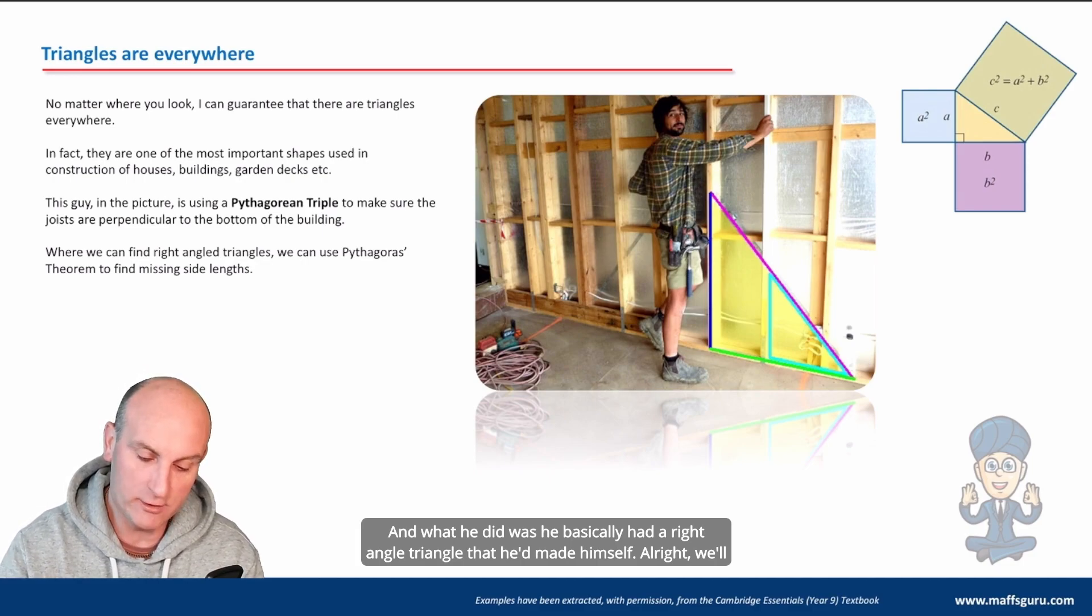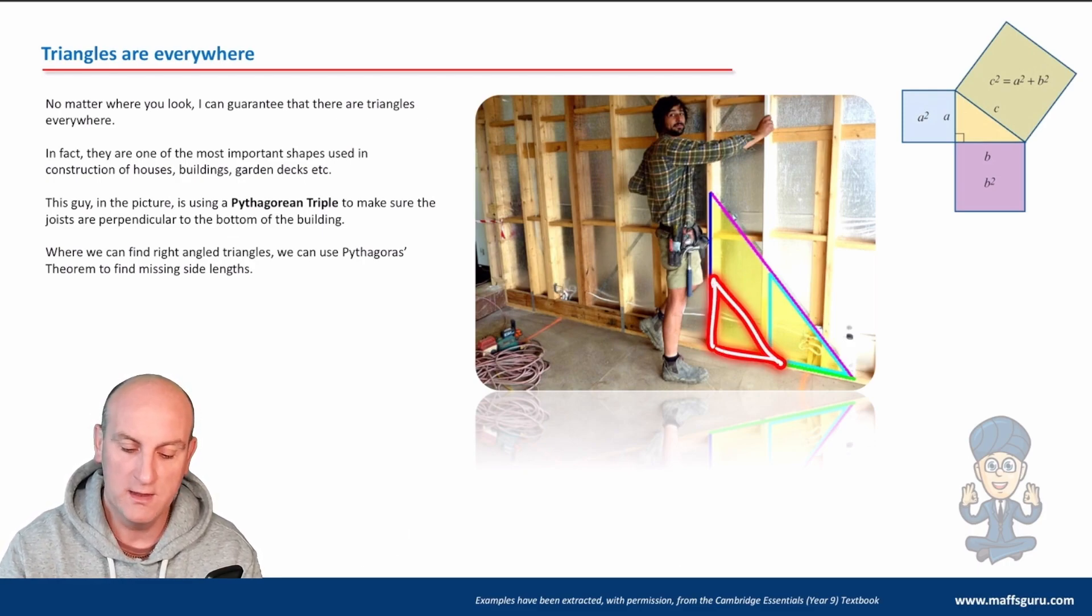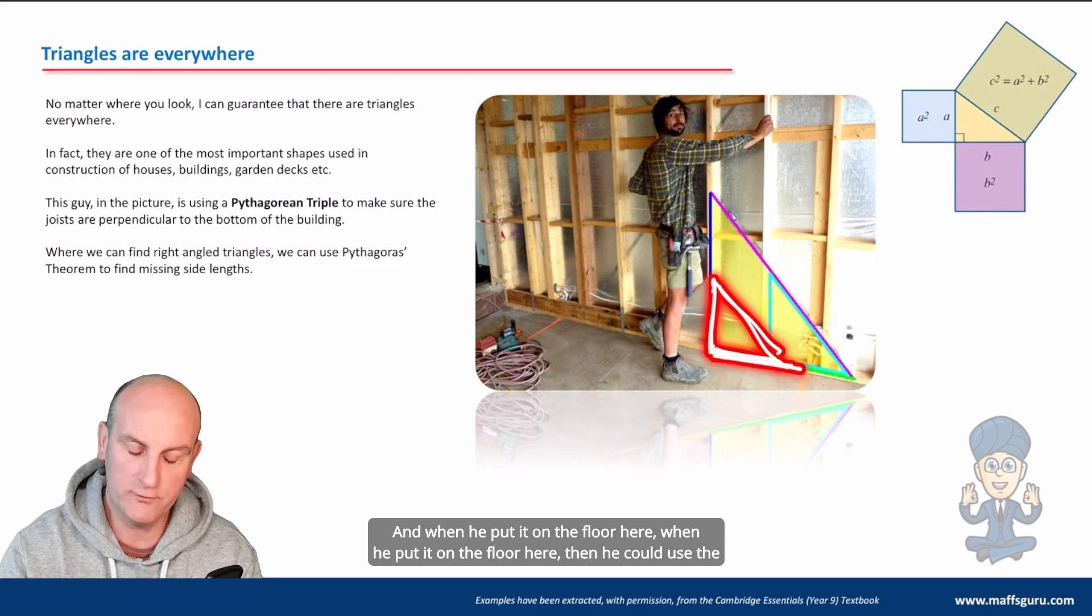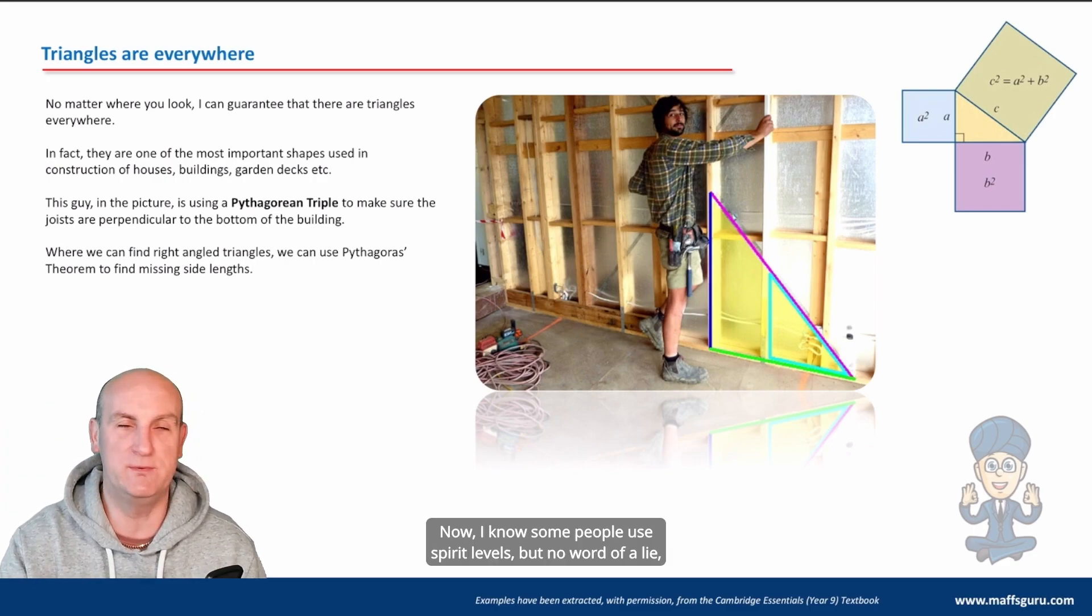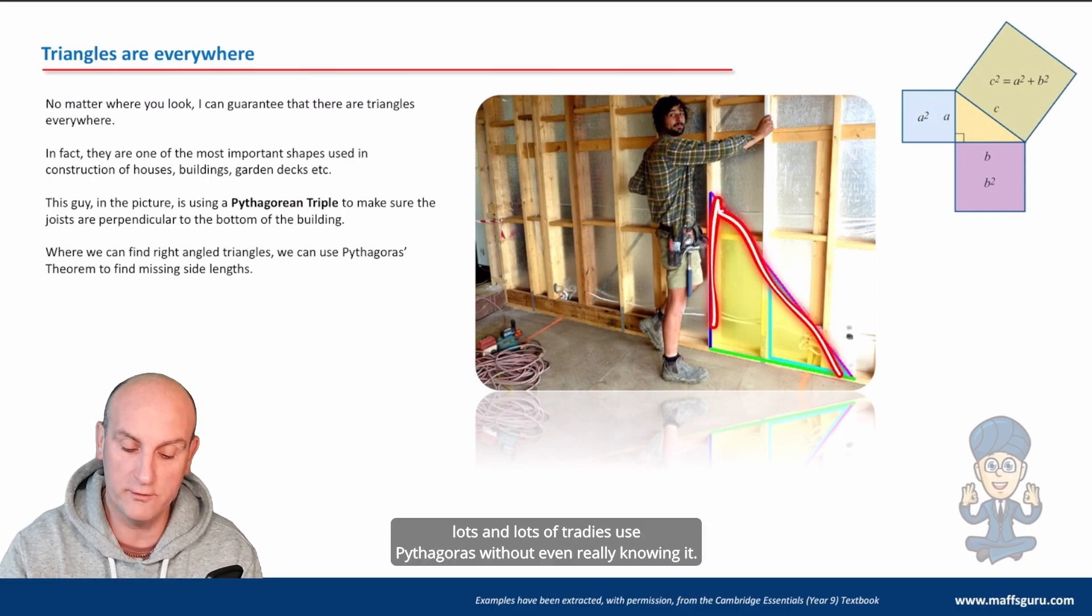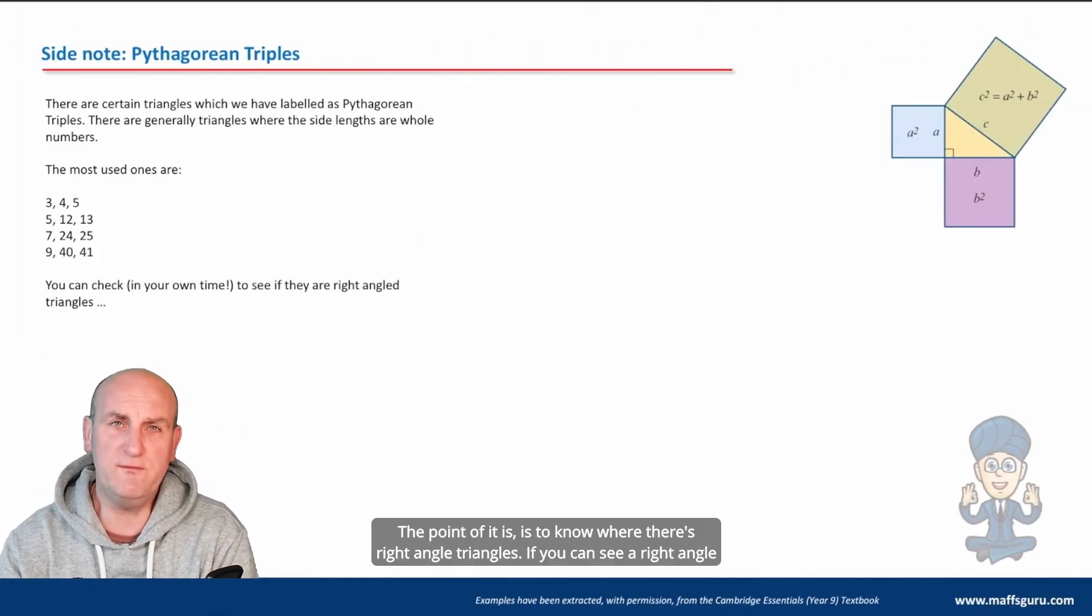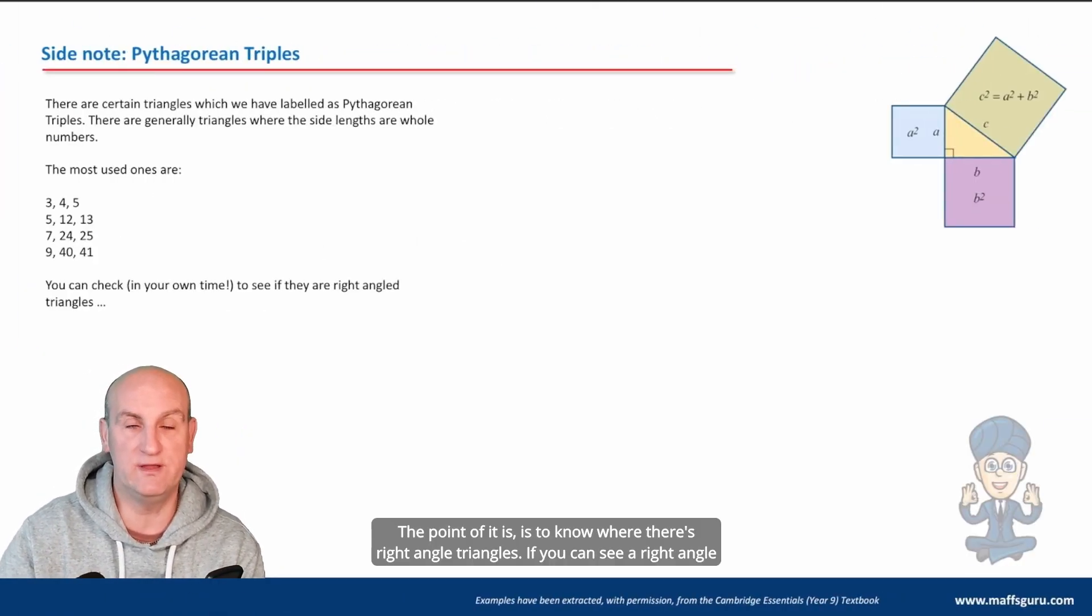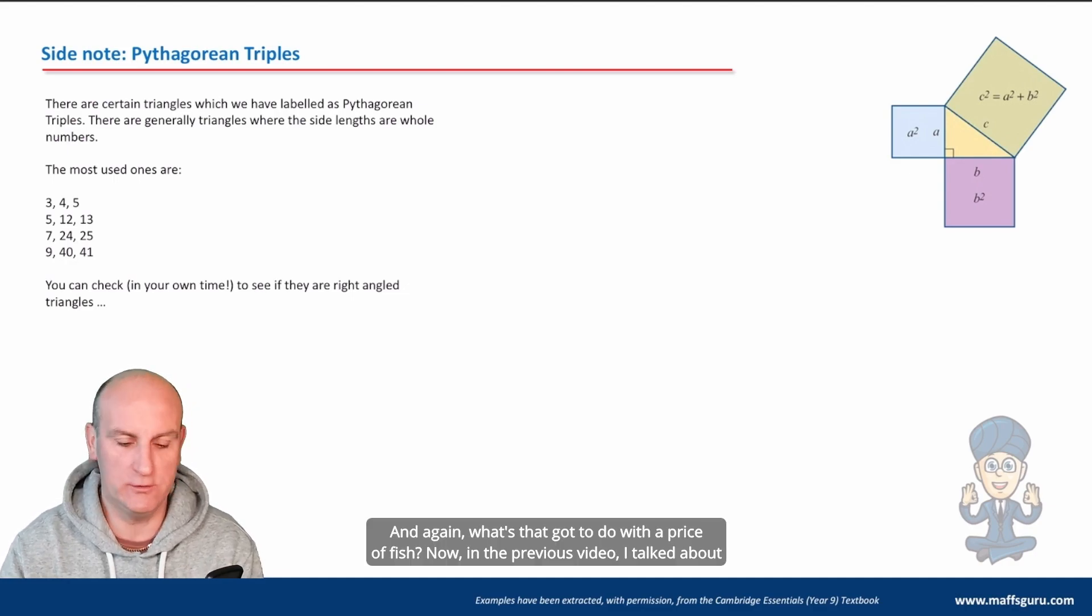What he did was he basically had a right angle triangle that he'd made himself. And when he put it on the floor here, he could use the vertical part of the triangle to work out how it's going to be level. Lots and lots of tradies use Pythagoras without even really knowing it. The point is to know where there's right angle triangles. If you can see a right angle triangle in any diagram, then you are cooking on gas or electric.